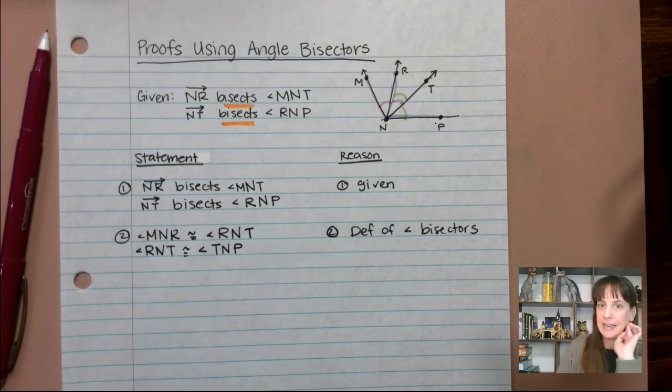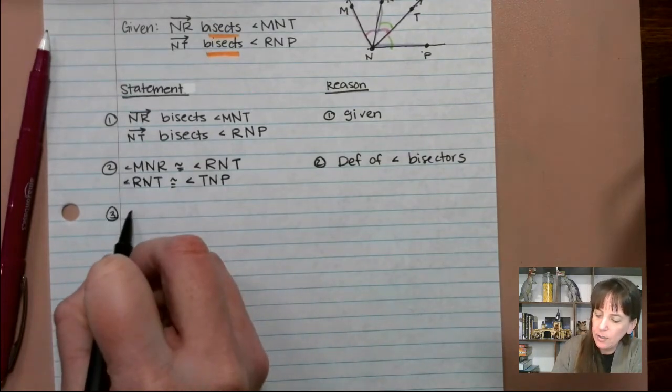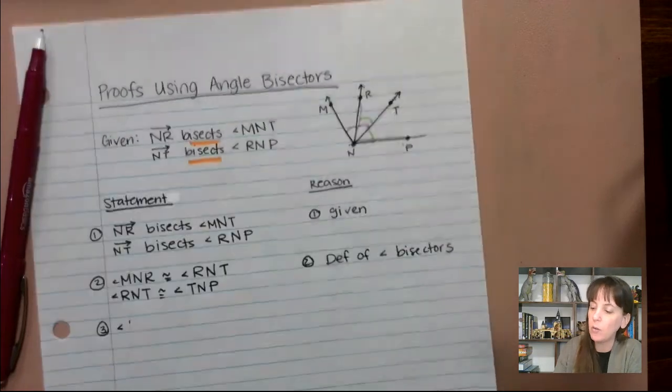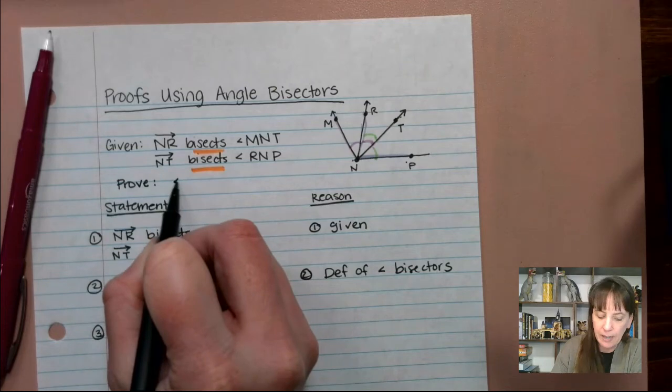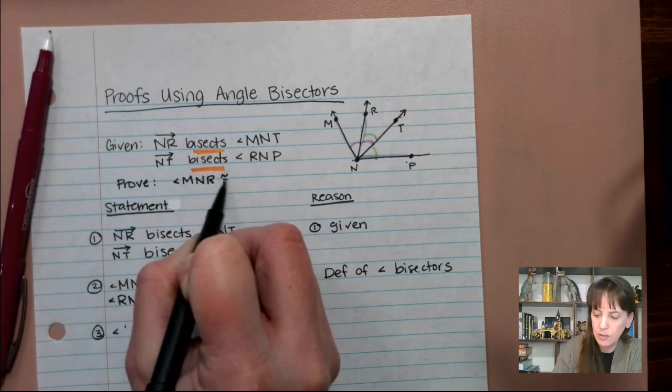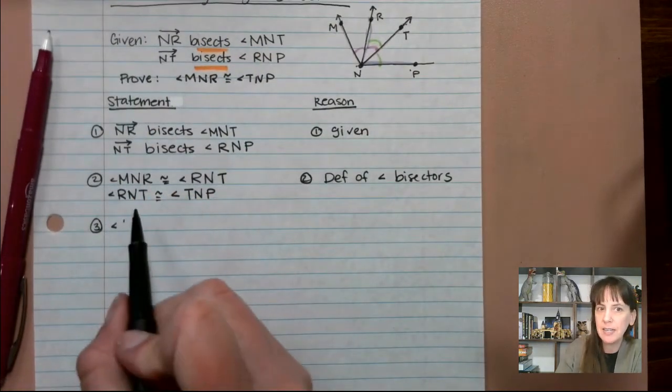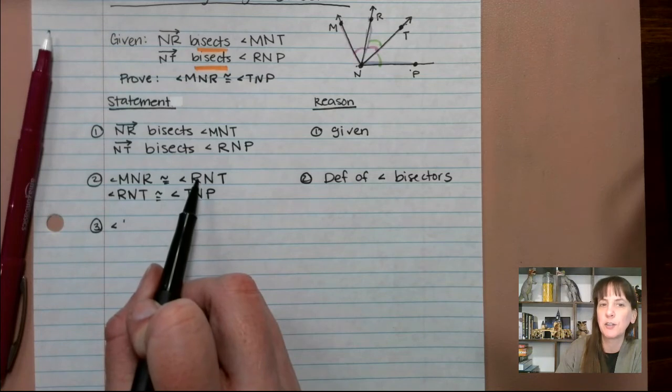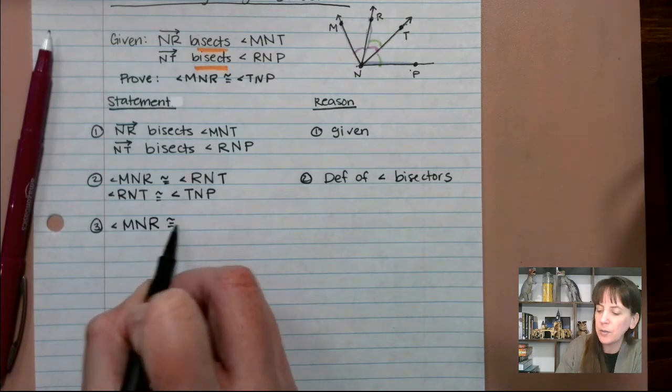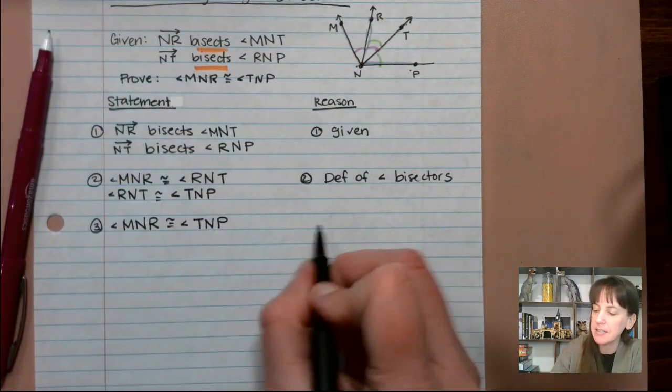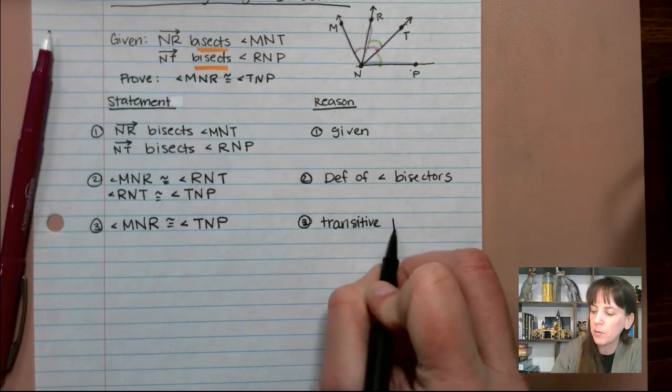So now that we have this guy in here, what we can say is, all right, let's do angle M. And so what we're trying to prove is that, oh, it probably would have helped if I had written what we were trying to prove here. My apologies. We are trying to prove that angle M-N-R is congruent to angle T-N-P. And so now, looking at what we have here, you can see that M-N-R is congruent to R-N-T, and R-N-T is congruent to T-N-P. Therefore, M-N-R is congruent to T-N-P because of the transitive property. Transitive property.